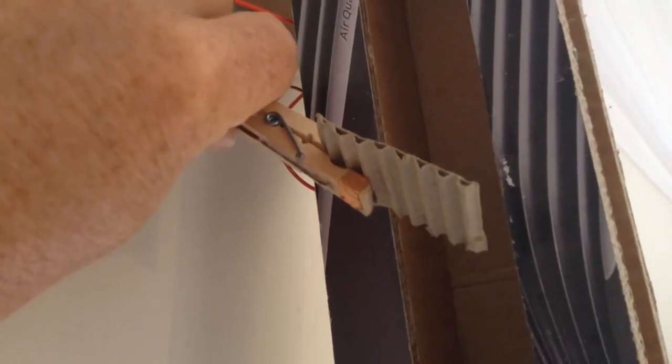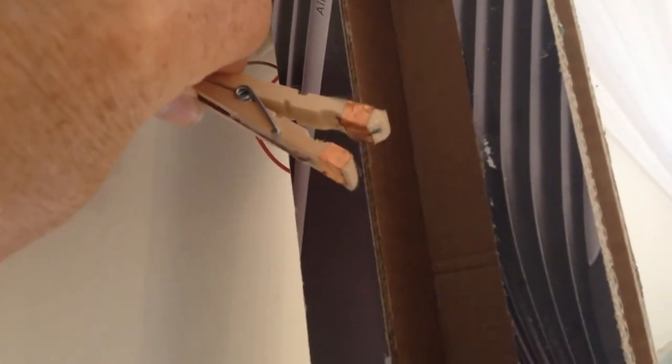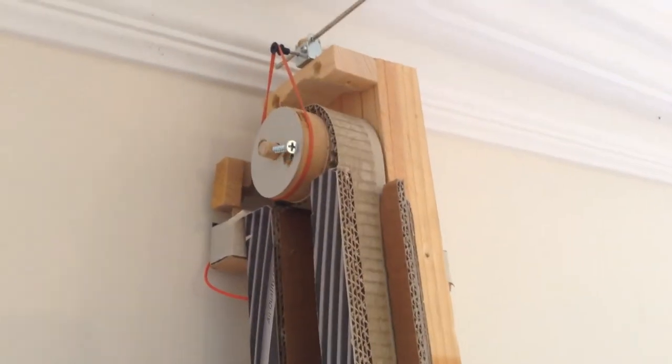So when I take this bit out of the peg switch, it should turn the motor on, and the belt starts turning quite well.